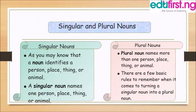There are two major forms of noun. We have the singular noun and the plural noun. The singular noun is the name of one person, animal, place or thing, while the plural noun is the name of more than one person, animal, place or thing.